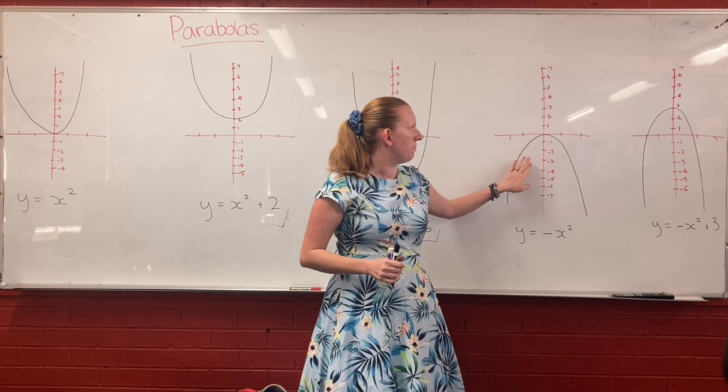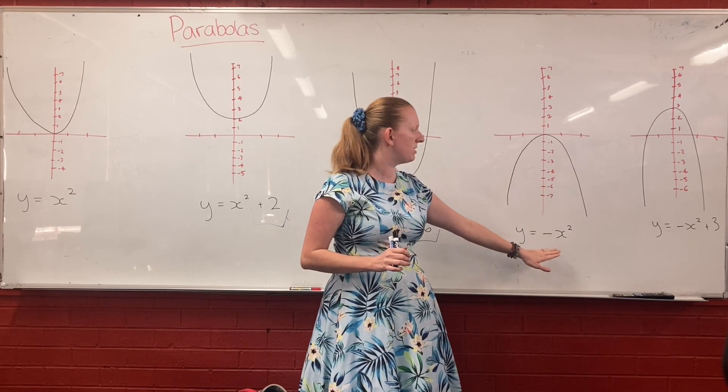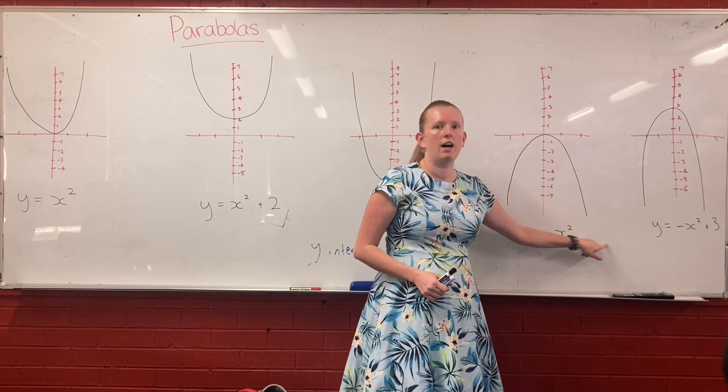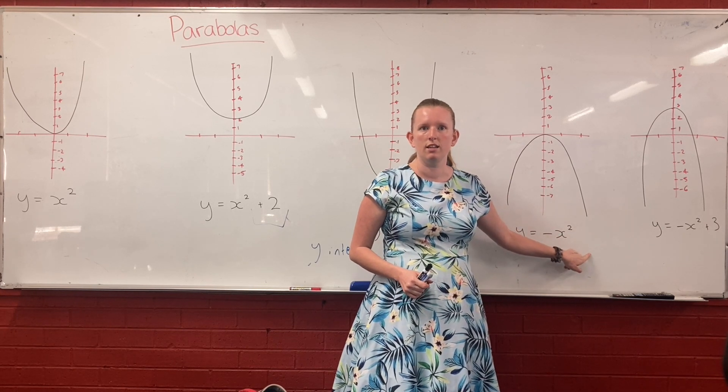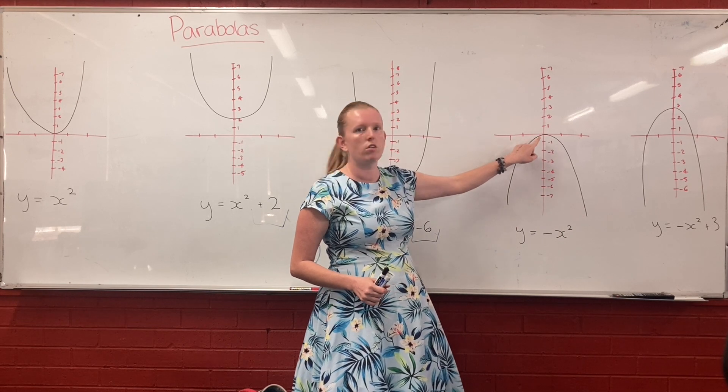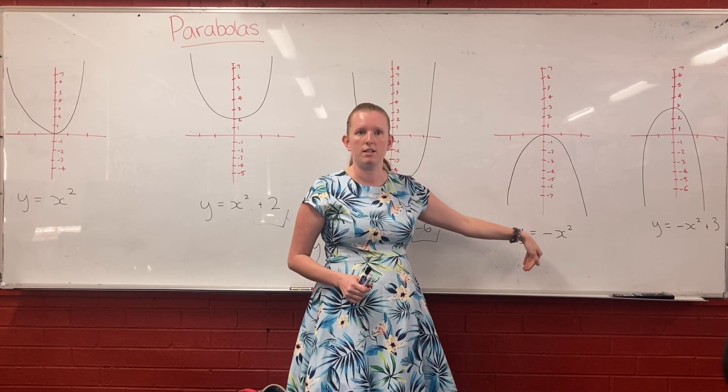So this is a basic negative parabola. Nothing else has been changed about it except that it's been flipped upside down. So because it doesn't have a y-intercept on the end here, it doesn't have any number tacked onto the end, you know it's going to touch at the origin, which is 0, 0. But it is negative, so it flips it upside down.